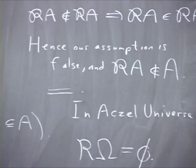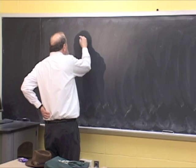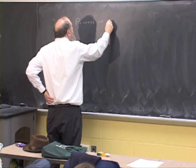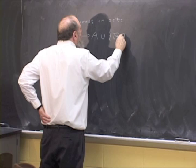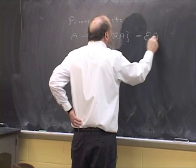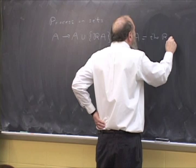One thing that you can do is actually define a process on sets. And so this is the process that takes A to A union the singleton of RA. I'll call this EA. So let's call this the Russell expansion of A.